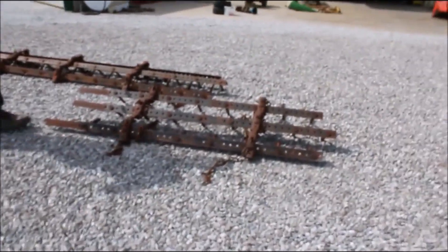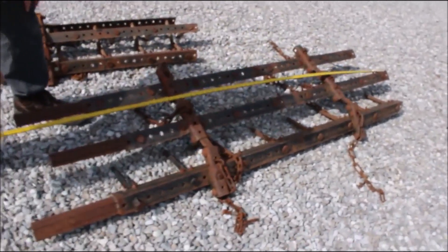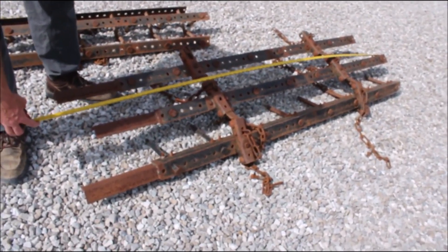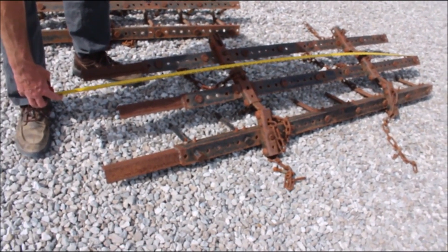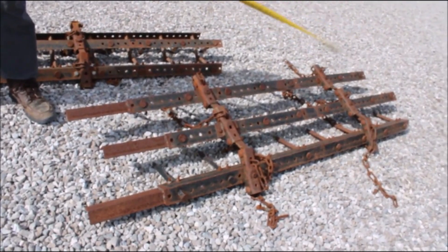All right, here we've got a spike harrow. This was on a disc, I believe. This one was on a wing, so this is basically just under seven feet, say six and a half feet.